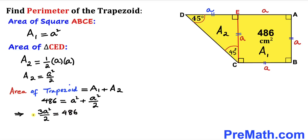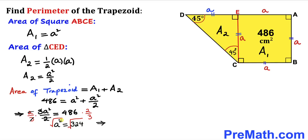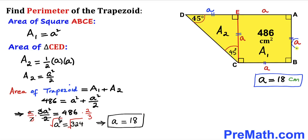Now we solve for a. Multiplying both sides by two-thirds to remove the fraction: the 2s and 3s cancel, so a squared equals 324. Taking the square root of both sides, a equals positive 18 centimeters. So our side length a is 18 centimeters.